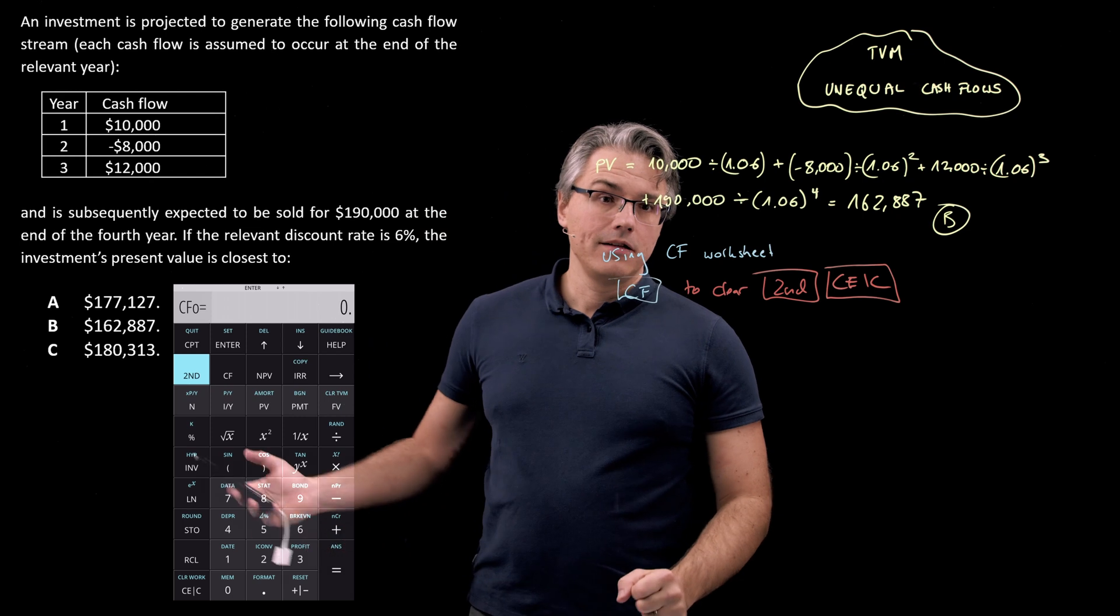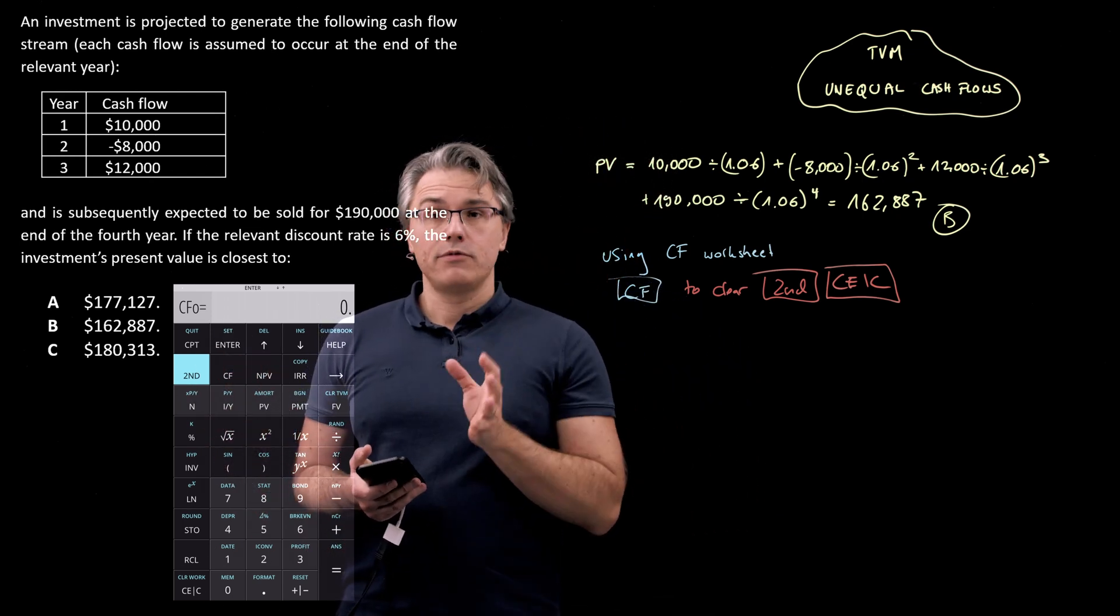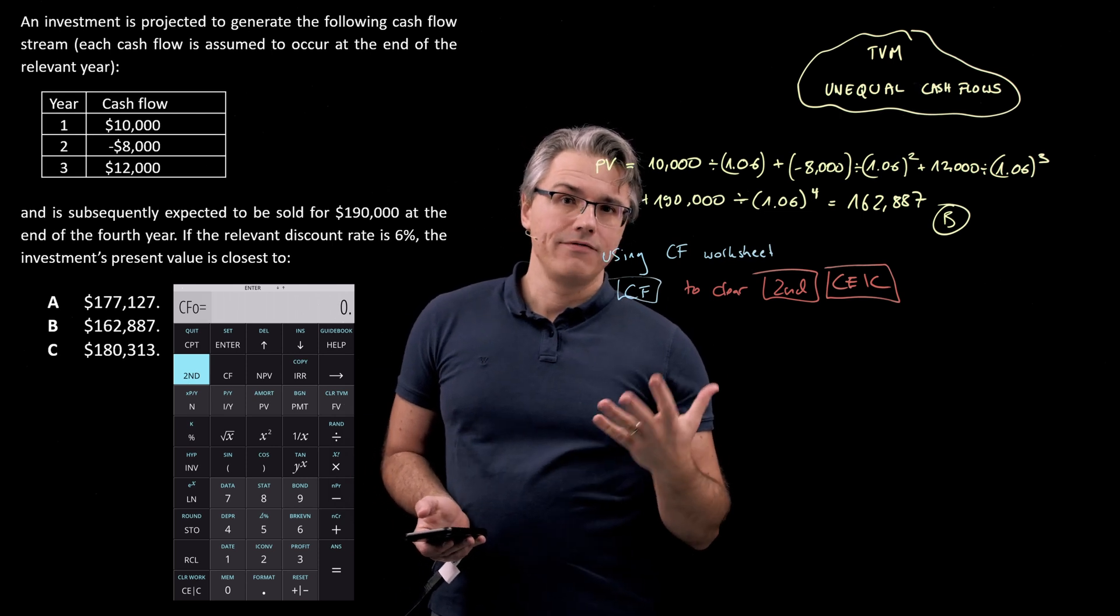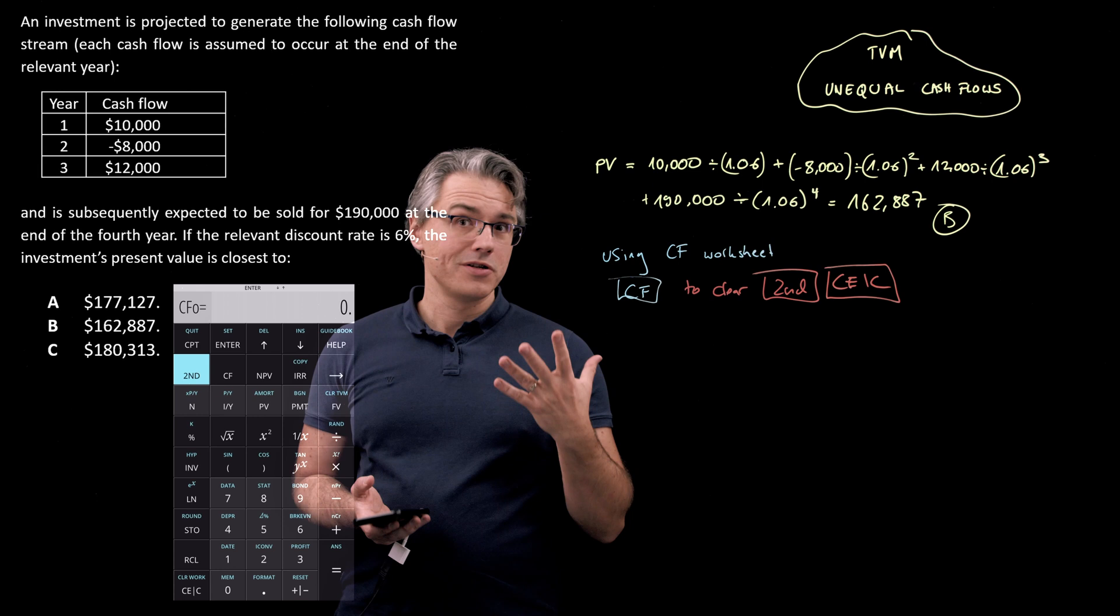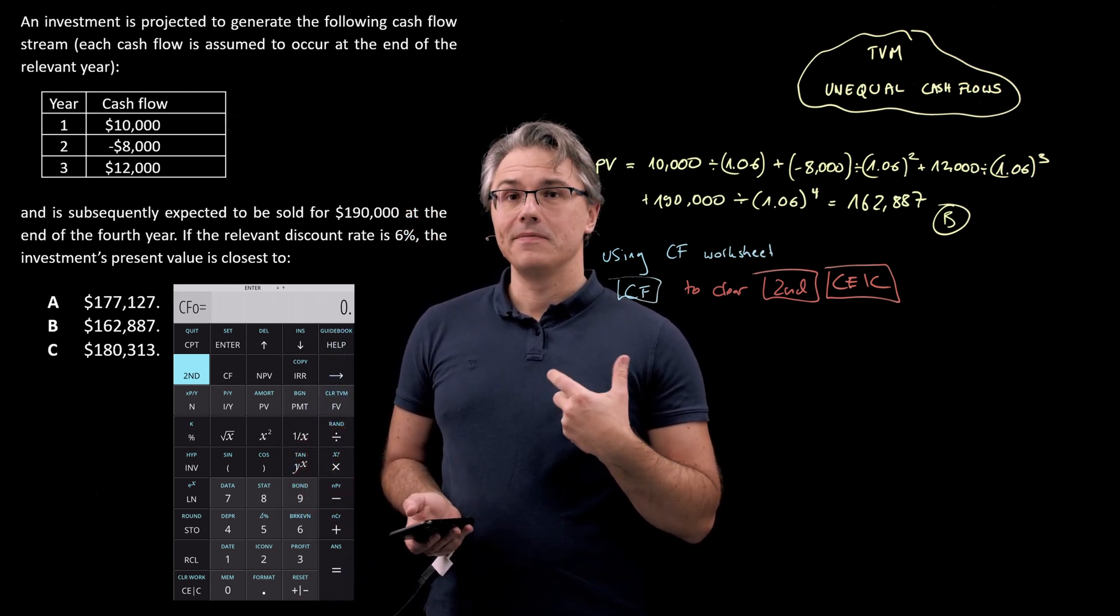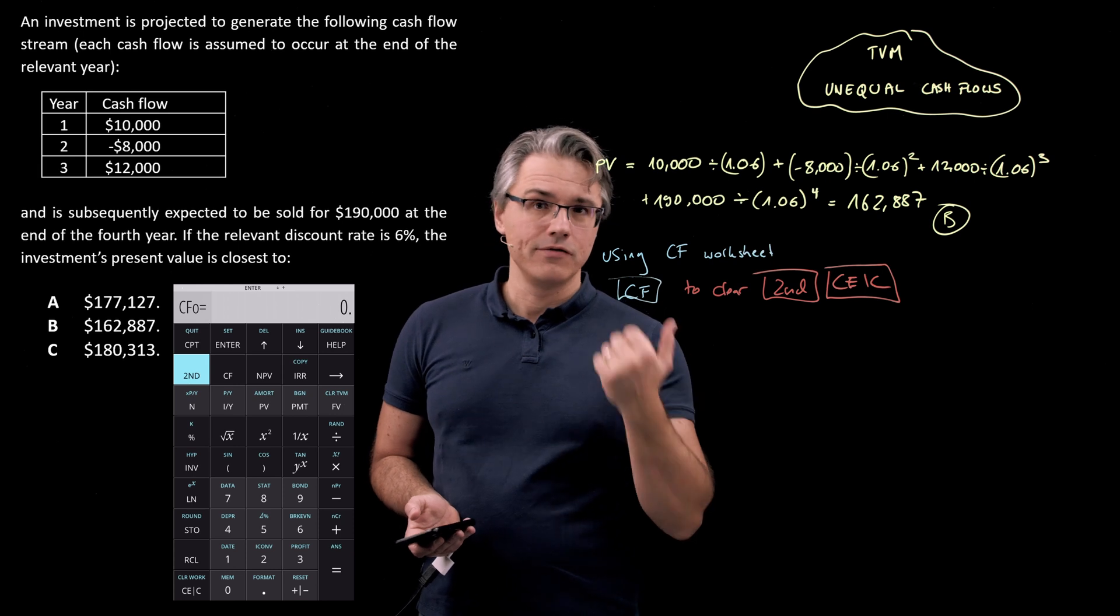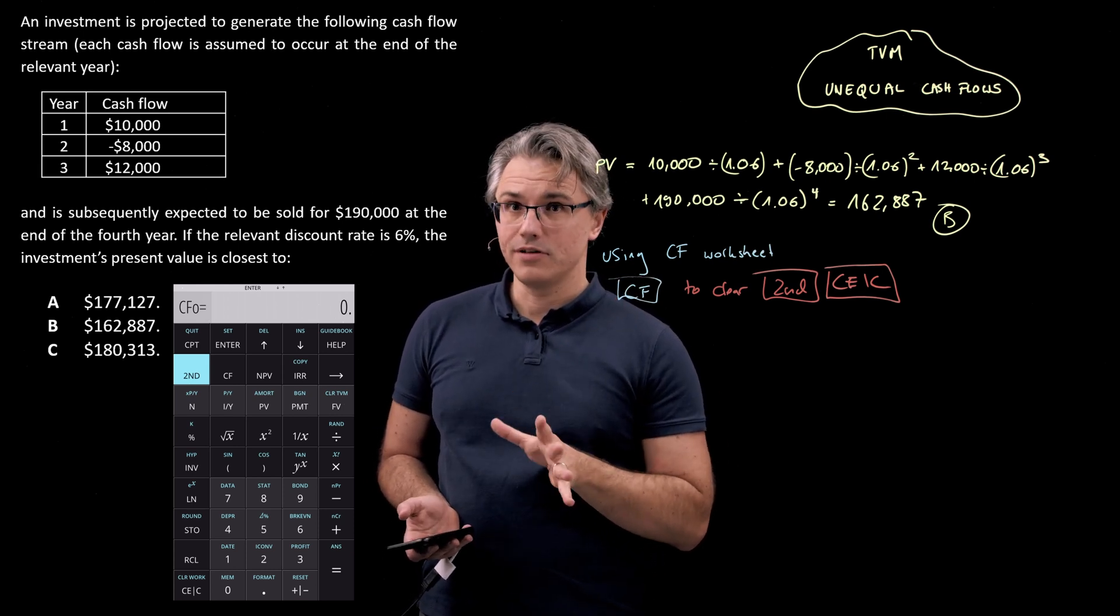Now you need to provide the calculator with the inputs. We can't provide the calculator with an input for CF zero, which is the cash flow at time zero, which is essentially going to be our present value of the whole project. There is nothing happening at time zero.